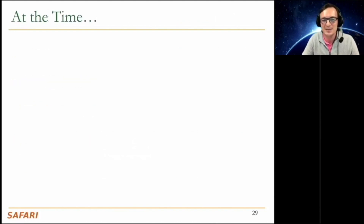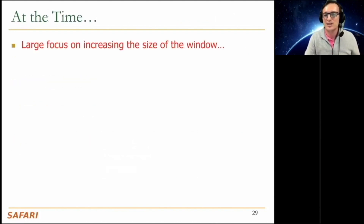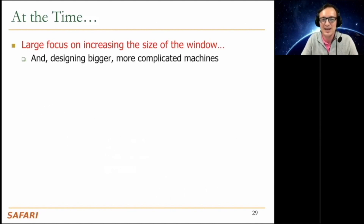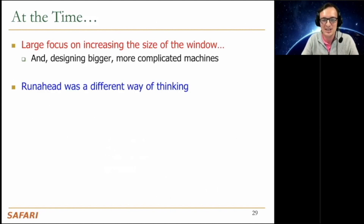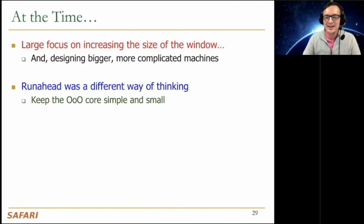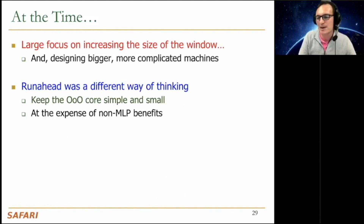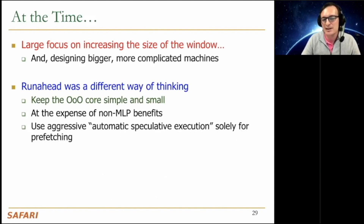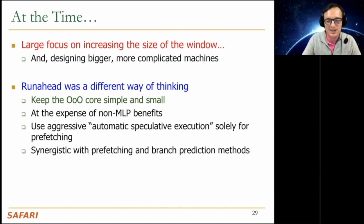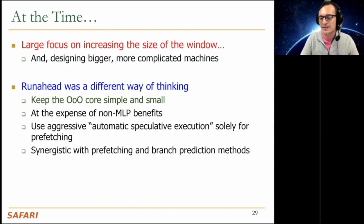Let me look to the past a little bit. At the time we were working on this, there was a huge focus on increasing the size of the instruction window and designing bigger, more complicated machines. Run-ahead was a different way of thinking: keep the out-of-order core simple and small, and use aggressive automatic speculative execution solely for prefetching. It turned out this was very synergistic with other techniques employed in the out-of-order core, like prefetching and branch prediction.